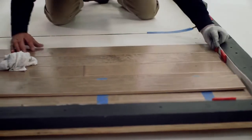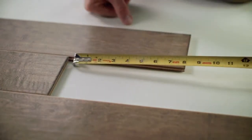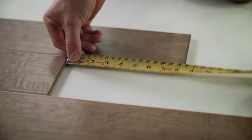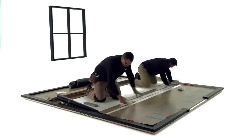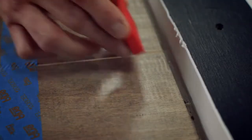As you start the fifth row, and for all later rows, you can stagger the end joints a minimum of 8 inches. Continue to install the floor, working right to left, repeating the process until the floor is complete. Continue to use spacers on all vertical surfaces to maintain the expansion space.